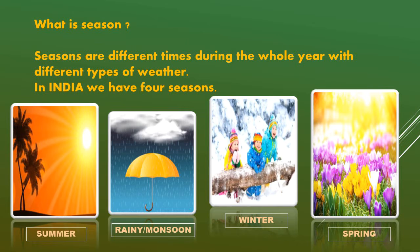In India, we have four seasons: summer, rainy, monsoon, winter, and spring season.